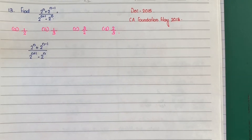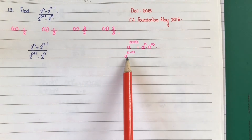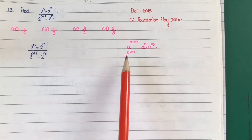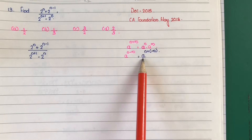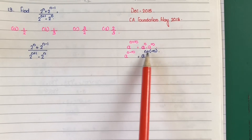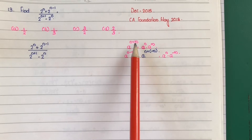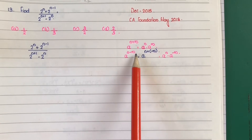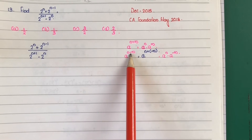First step, we will use the rule: a raise to n plus m equals a raise to n into a raise to m. Similarly, a raise to n minus m equals a raise to n into a raise to minus m, since n minus m is equal to n plus minus m.